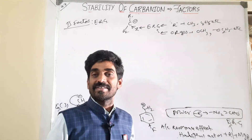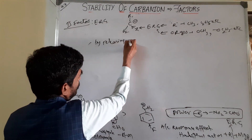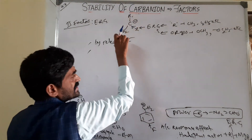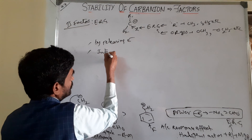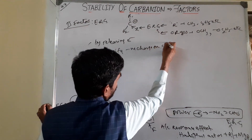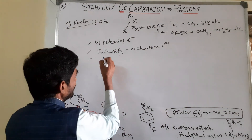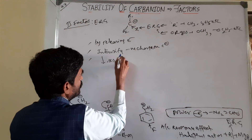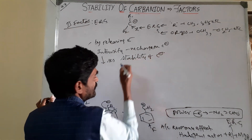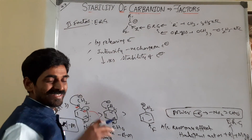Electron releasing groups, by releasing electrons, intensify the negative charge on the carbon atom. That increases the instability - that decreases the stability of the carbanion. This is the concept. By applying this concept, you can do different examples. Simple concept, more examples.